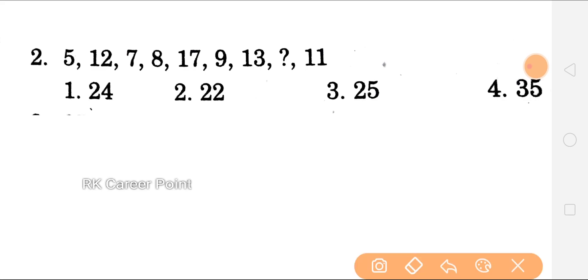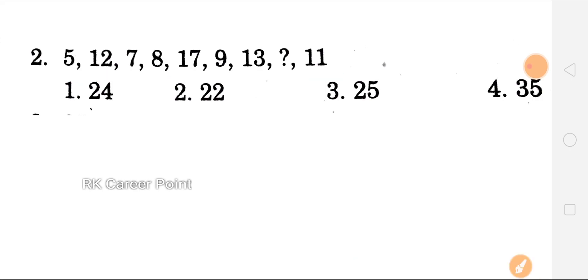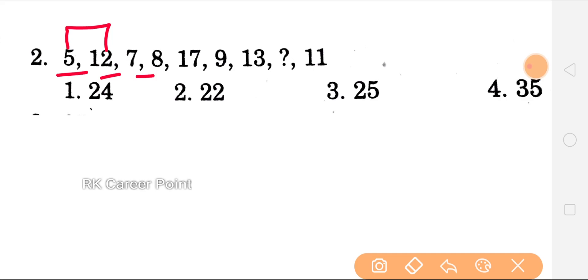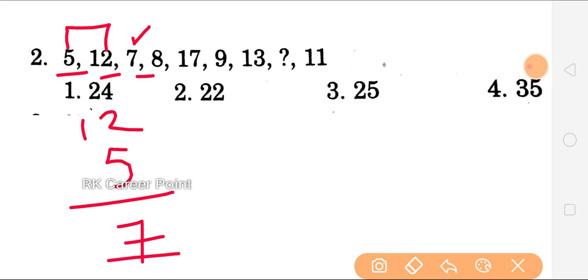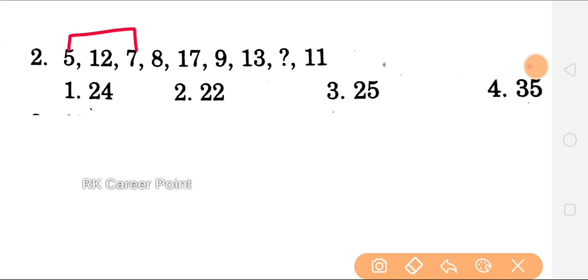So here we have: 5, 12, 7. So that means 5, 12, 7. If we add on, minus 6, the next series is common. So the same pattern: next numbers are common. Here we have 5, 12, 7. What is the relationship between 5 and 12? We have 5 plus 7, which gives 12.